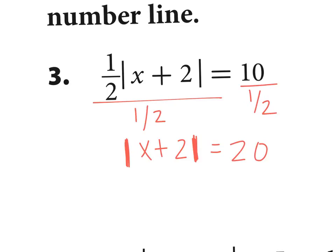Can I subtract 2 at this moment? No — because it's still in absolute value symbols. So at this point I have to separate it out into two problems: x plus 2 equals positive 20, and the other one would be x plus 2 equals negative 20.